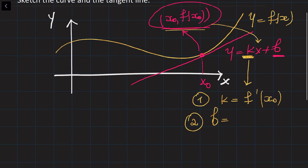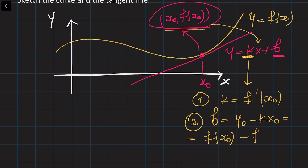So the slope of this line is going to be equal to the derivative of this curve at this point. Then we substitute the coordinates of this point into the line equation, because this point lies on the line as well. So b is going to be y0 minus k times x0. We know k equals f prime of x0, and y0 equals f of x0. That's our strategy.